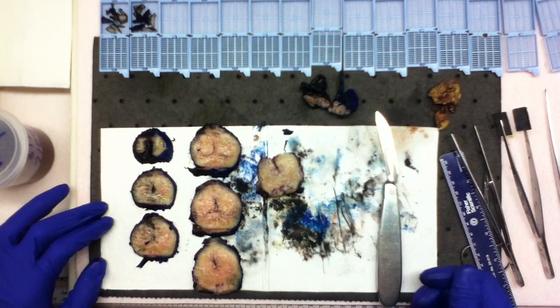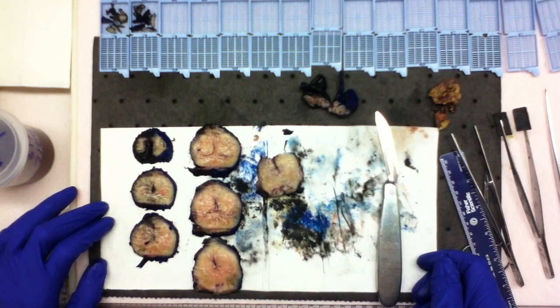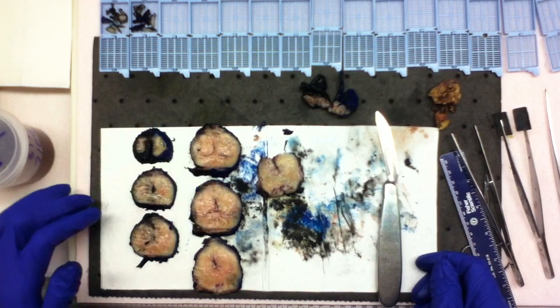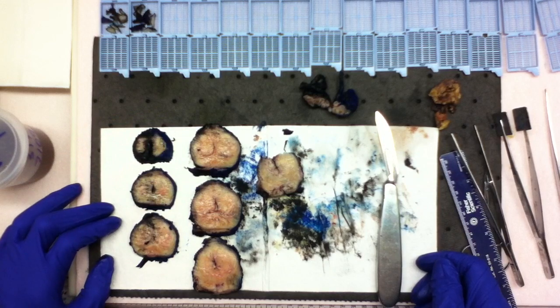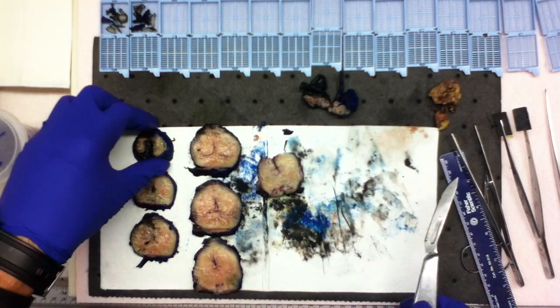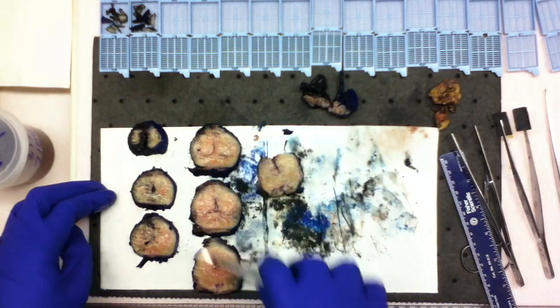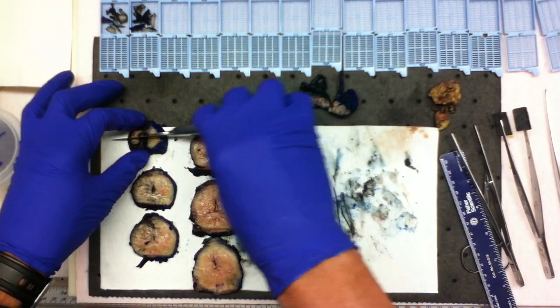Sectioning reveals a tan yellow to white, granular cut surface with marked areas of nodularity grossly consistent with BPH. And now I'm going to take the entire prostate from apex to base and submit the entire gland.